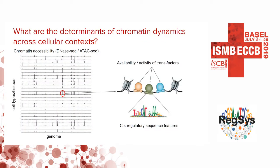DNase-seq and ATAC-seq across diverse cellular contexts and tissues have revealed millions of putative regulatory elements, many with dynamic patterns of accessibility across cellular contexts. For a given cellular context, chromatin accessibility primarily depends on two main factors: the presence of cis-regulatory features, which may combine to give rise to complex motif grammars, and the availability and activity of trans factors in that cellular context.